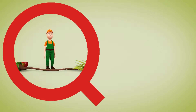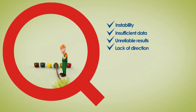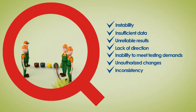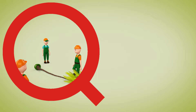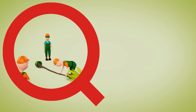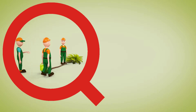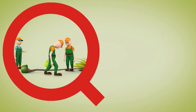and even loss of business. Poorly managed test environments can cause any number of issues during testing, such as instability, insufficient data, unreliable results, lack of direction, inability to meet testing demands, unauthorized changes, inconsistency, fragmented environments, and under-utilization of assets. Without a structured approach to managing test environments, it's easy for chaos and confusion to become so normal that testers forget what it's like to work with a smooth process. This difficulty becomes even more pronounced if your team has multiple development initiatives trying to share the same inadequate environment or other resources — trying to keep up with the changes can be a full-time job in itself. It doesn't have to be that way, though.